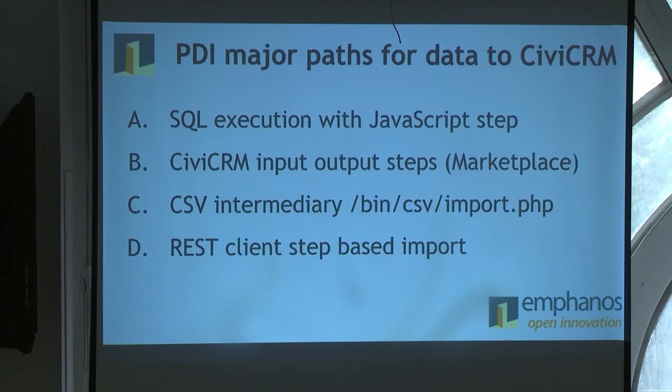Here's a quick recap of the major ways Pentaho Data Integration can get data into CiviCRM. There's SQL execution, where you craft a SQL statement — for instance, an INSERT INTO civicrm_contact statement — to insert a row into CiviCRM. That's usually done in conjunction with a JavaScript step, where you can write an arbitrary JavaScript script. However, SQL just inserts the row without knowing about other things that are happening.